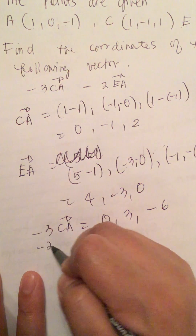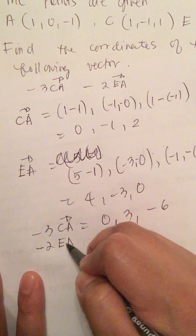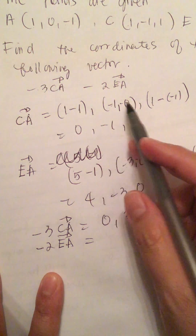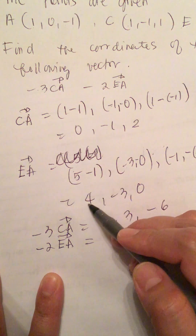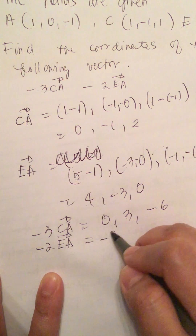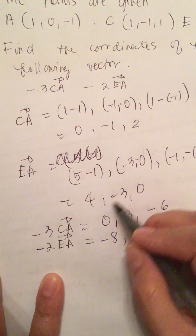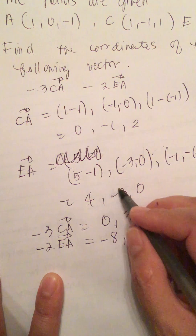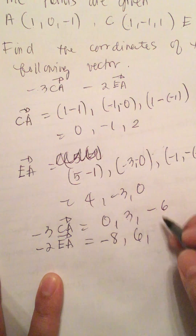So minus 2 times vector EA is equal to minus 2 times (4, -3, 0): that gives minus 8, and then a positive 6 because there are 2 minus signs, and 0. So minus 2 EA equals (-8, 6, 0).